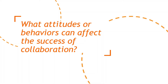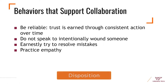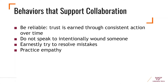What attitudes and behaviors can affect the success of collaboration? Have you ever had a teammate who celebrated little victories and helped you feel a sense of accomplishment? Or one who wasn't reliable and made you feel overwhelmed with an undue share of work? While there are lots of behaviors that support group harmony, these four are nearly universal. Be reliable — trust is earned through consistent action over time. If you say you're going to do something, do it. If you're going to be late or feeling overwhelmed, be upfront and honest and ask for help. Likewise, listen when someone asks for help and don't assume they are just being lazy.